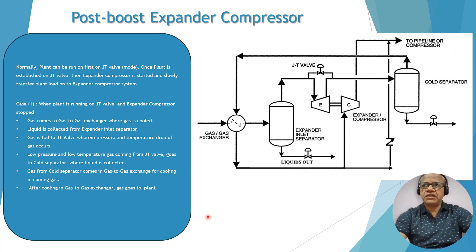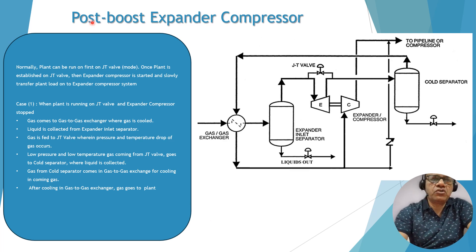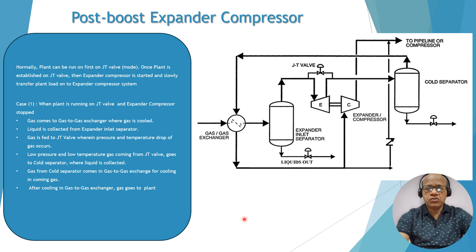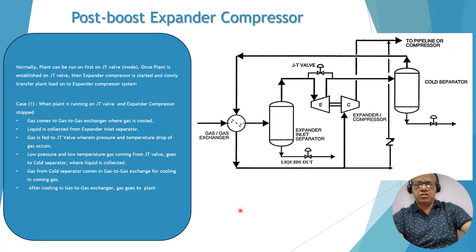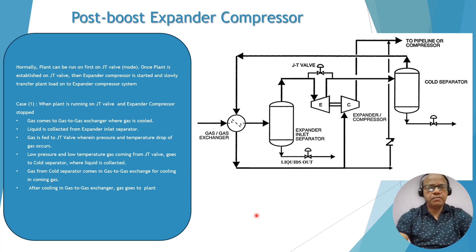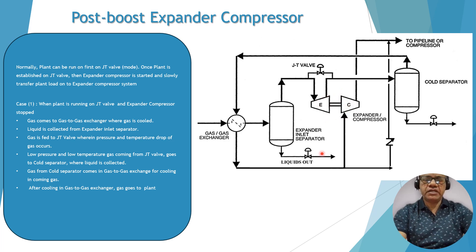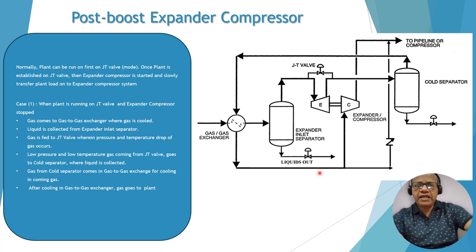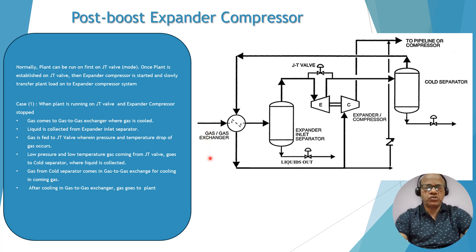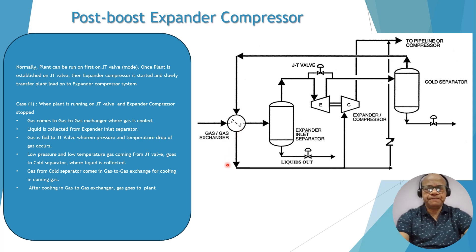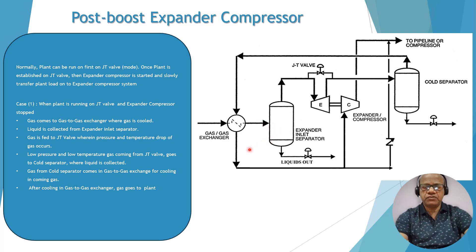Now coming to the post-boost expander compressor. Post-boost means compression of gas after the expander, and that is why it is named post-boost. Same way, the first time you have to run the plant on JT mode and then slowly start the machine on the expander. Case one: when the plant is running on JT mode and the expander compressor is isolated. Gas comes from the plant and goes to the gas-to-gas exchanger where it is cooled, then comes to the expander inlet separator where liquid is collected.